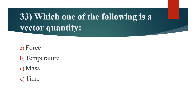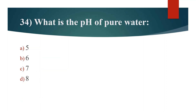Thirty-third question. Which one of the following is a vector quantity? Option A: Force. Option B: Temperature. Option C: Mass. Option D: Time. Answer is Option A: Force.